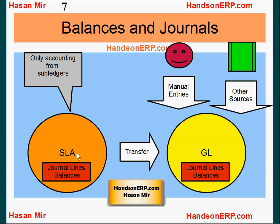Subledger accounting module only contains data for subledgers. The general ledger module will have data coming from subledgers through subledger accounting module, and it will also have journals entered directly into GL — either using the enter journal screen, spreadsheets, formula recurring journals, mass allocations, elimination sets, or any other method. You can also bring journals using the import feature from third-party applications, or bring journals from other ledgers into this particular ledger using consolidation data transfer.